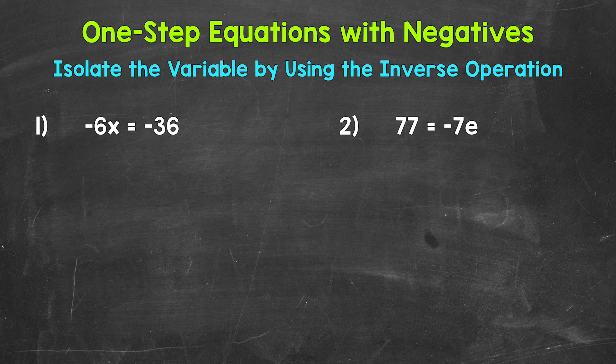Let's jump into number one, where we have negative 6x equals negative 36. We have a number next to a variable, which means we are multiplying — this is negative 6 times x equals negative 36. Whenever you see a number next to a variable, that is representing multiplication.